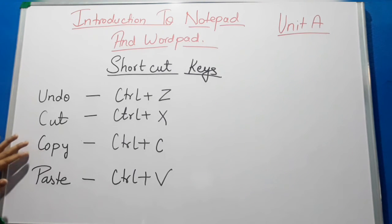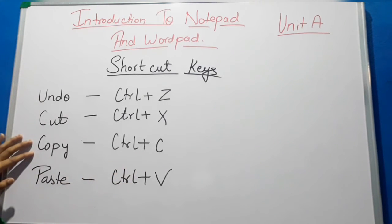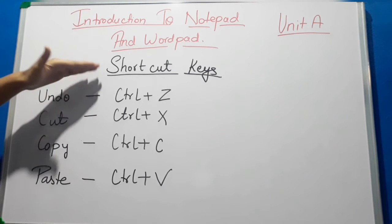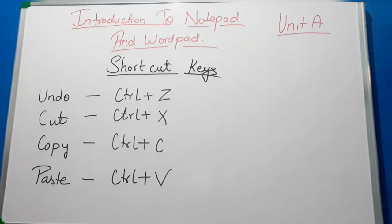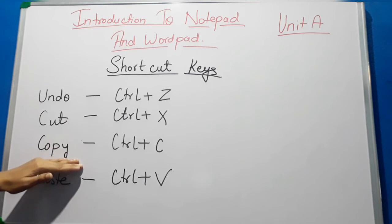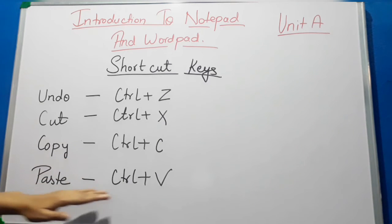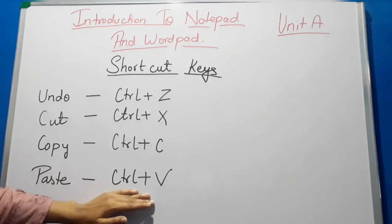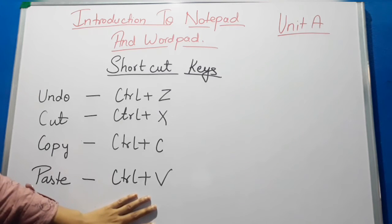The next shortcut is Copy — Ctrl+C — which is used to copy any text from one place so it can be pasted somewhere else. After copying, you use Ctrl+V to paste the text to the other location.